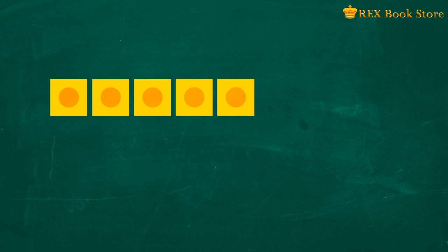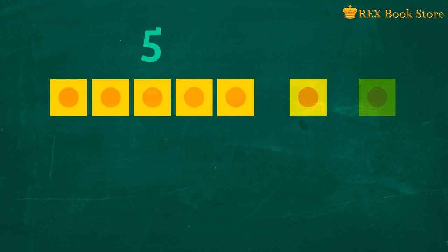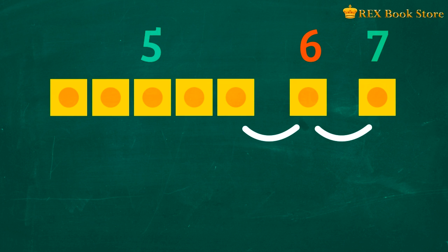This time we'll try a different way of adding numbers. Look at the units below. There are five units and another two here. Instead of making number bonds, we'll count on. From five, we will count until we get to the second unit on the right. Five, six, seven. How many times did we count on? We counted on two times. This means that five units plus two units equals seven units.